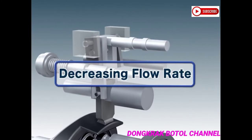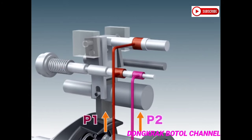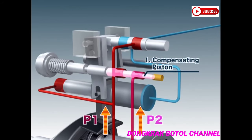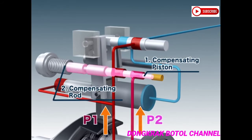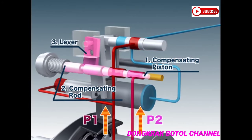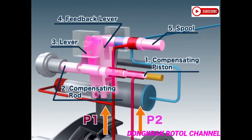Next, we will explain how the regulator decreases the flow rate. When the delivery pressure of the pump, P1, or of a companion pump, P2, increases, the pressure moves the compensating piston, pushing it against the compensating rod. As the compensating rod is pushed, the lever rotates, moving the feedback lever, which in turn moves the spool.